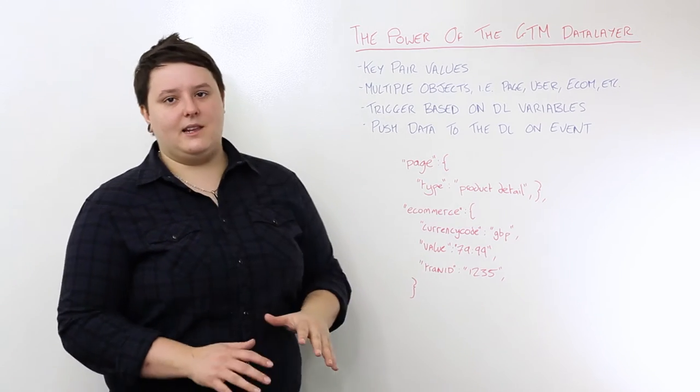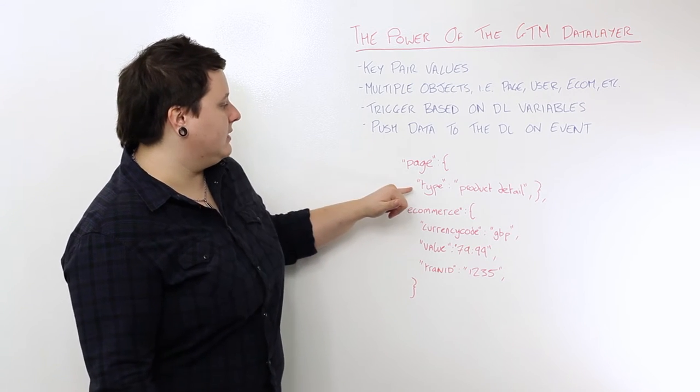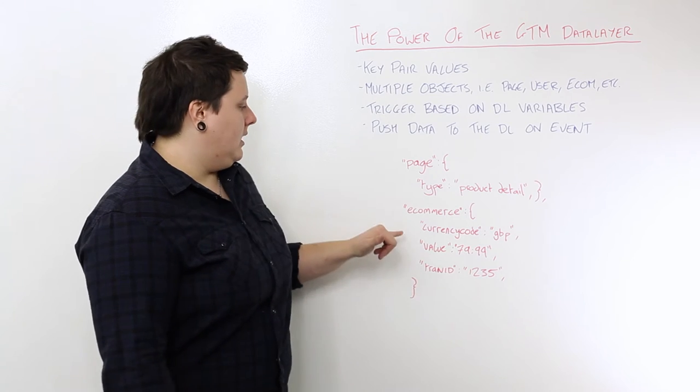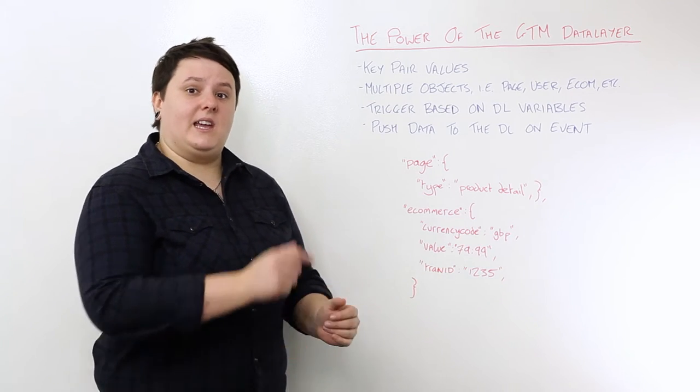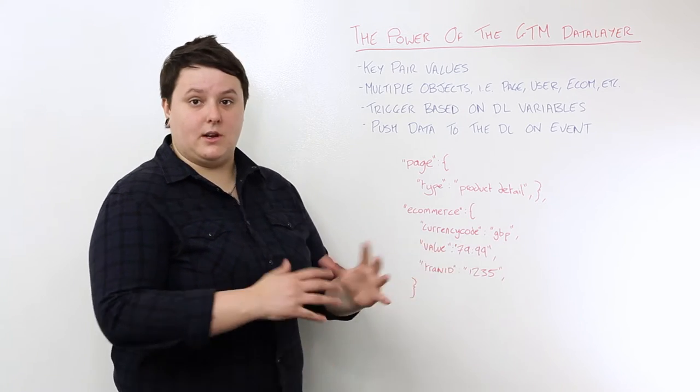So essentially, what the data layer is, is it's key pair values. So in these examples, you can see I've got type, product detail, currency code, GBP. I'm literally saying, this is the dimension and this is the metric that I'm sending through.